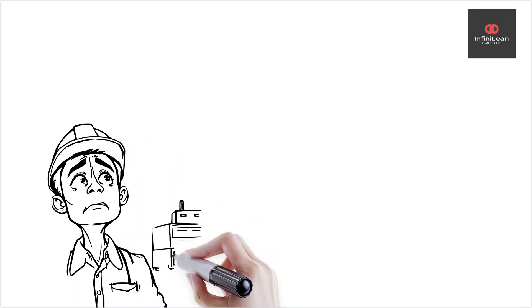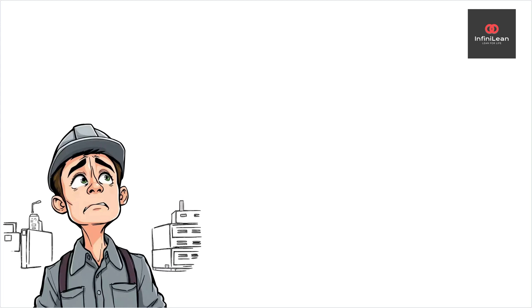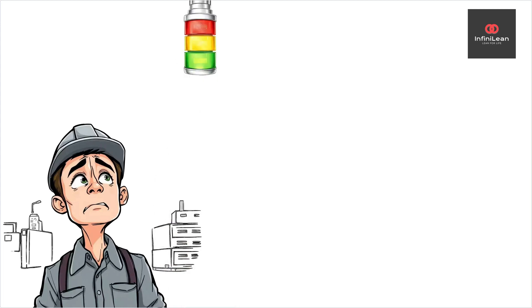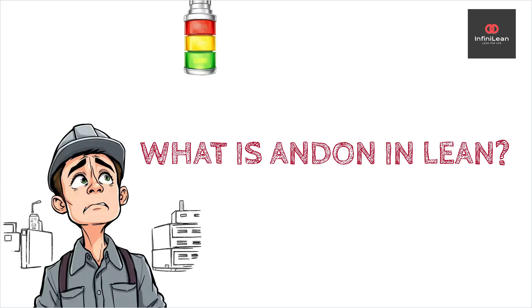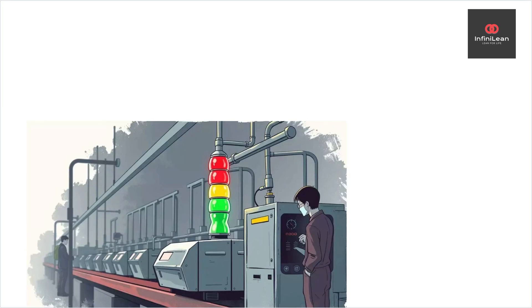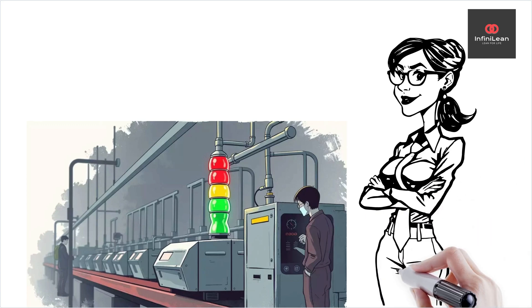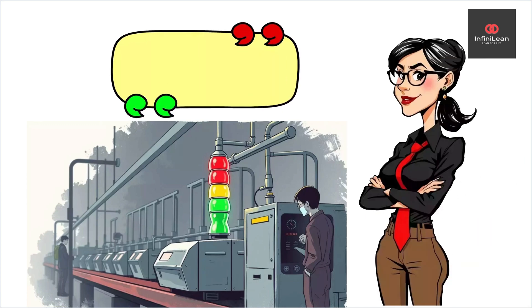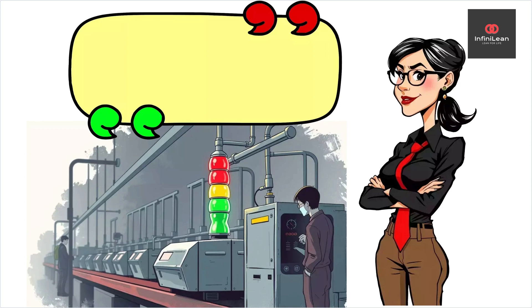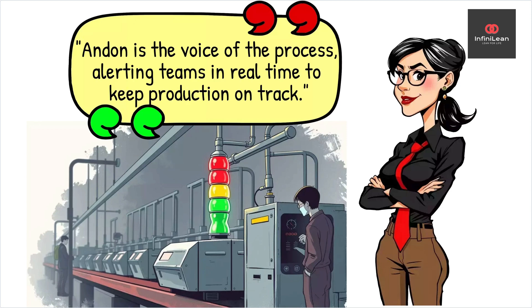Hello and welcome back to our channel. Today we are diving into an essential concept in lean methodology called Andon. What is Andon and why is it essential for efficiency in manufacturing and other industries? In lean methodology, Andon is a system designed to alert operators and management to issues in the production process. The term originates from the Japanese word for lantern or light, reflecting its function as a visual signal to indicate the status of a process.